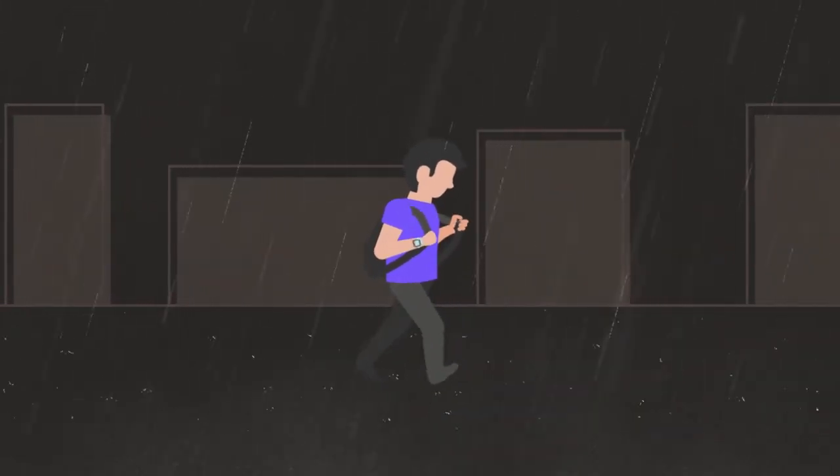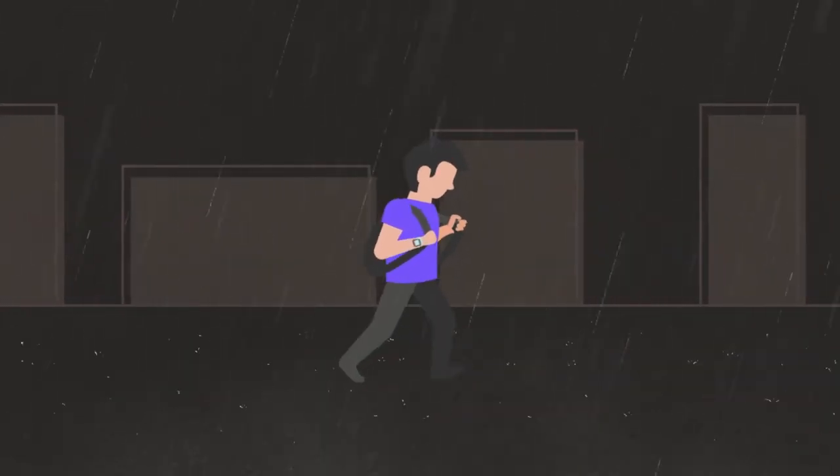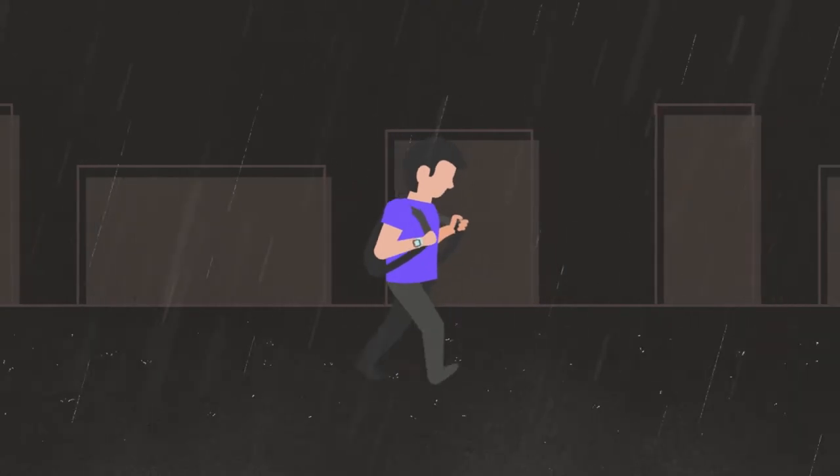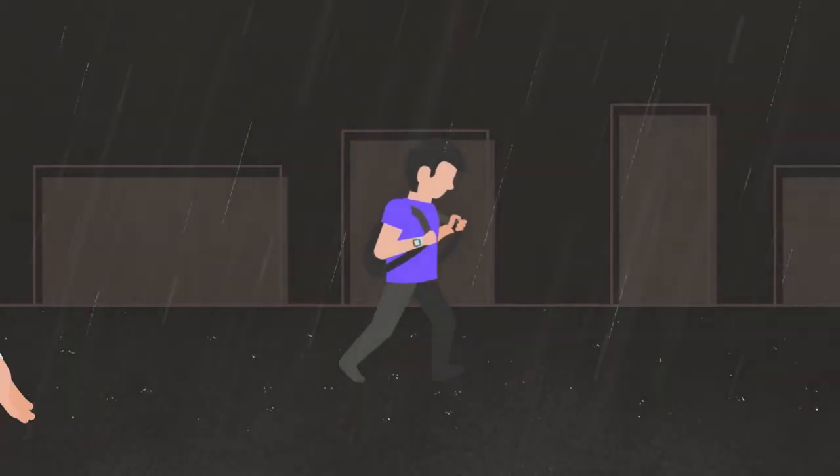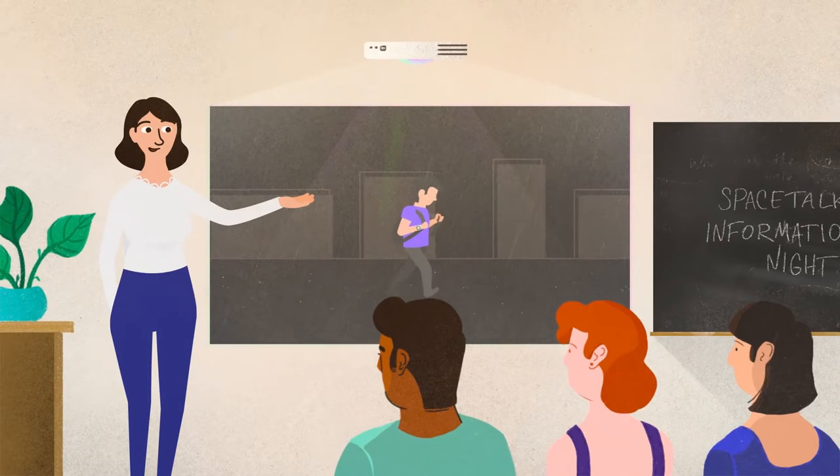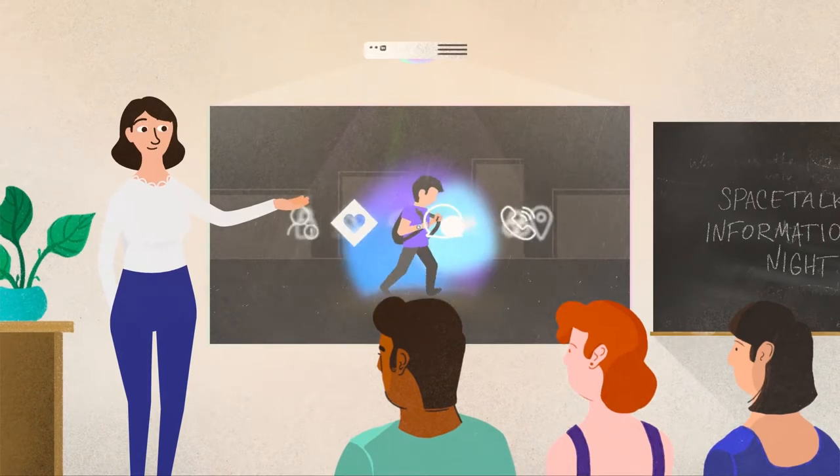Missed the bus, they decided to walk home. Now you're not sure where they are. Sound familiar? Well, kids want freedom and parents want to know that they're okay. Space Talk provides both.